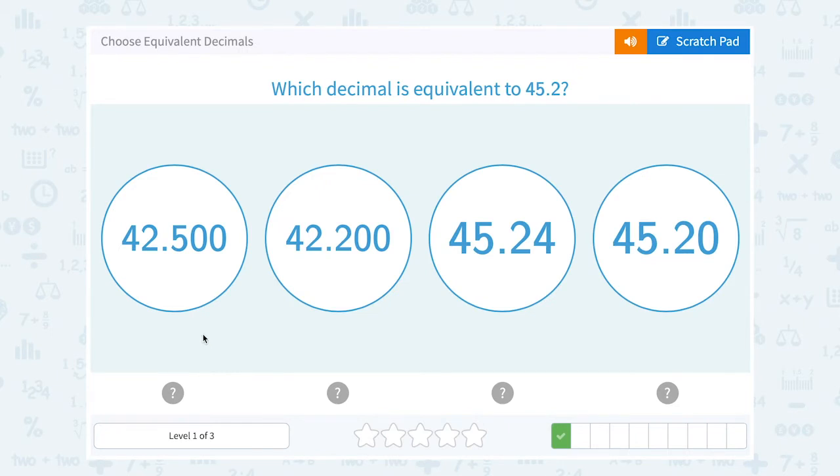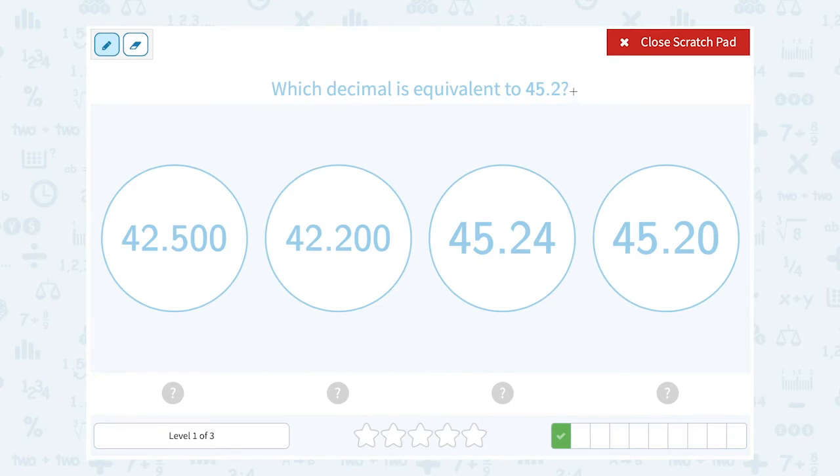Which decimal is equivalent to 45.2? First of all, I know my whole number has to be 45 so it's not going to be these first two. It's going to have to be 45.2 and the only number I can add at the end of that decimal to keep it exactly the same is a zero. So this one is close but not exact. 45.2 is exactly the same as or equivalent to 45.20.